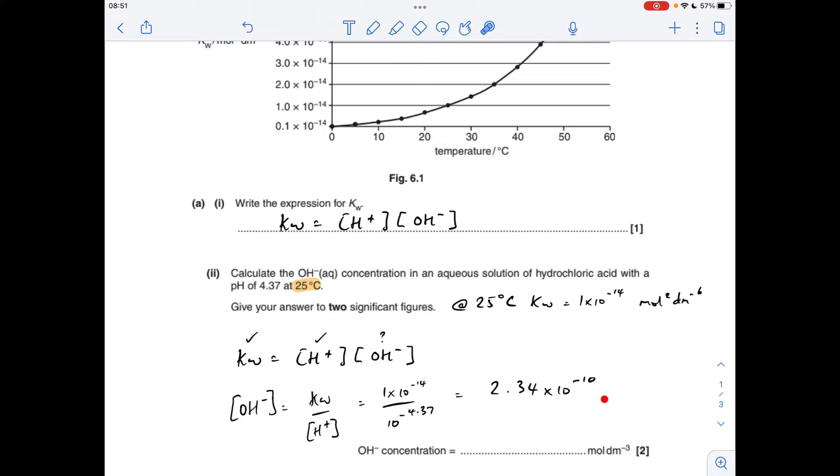and out should pop the answer. So that gives this calculated value here, 2.34 times 10 to the minus 10, but be careful, it wants it to two significant figures. So it's 2.3 times 10 to the minus 10.